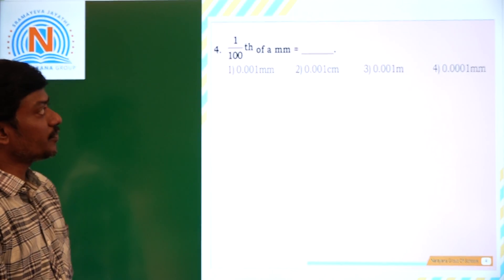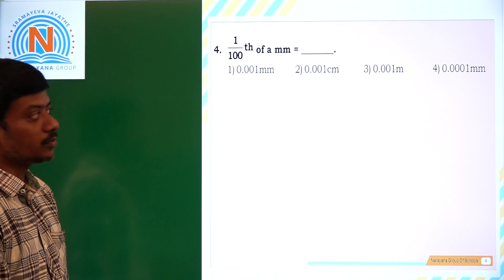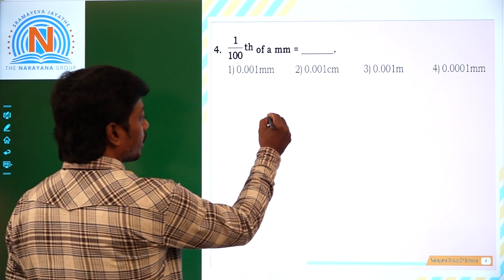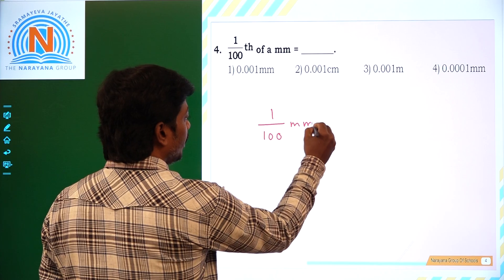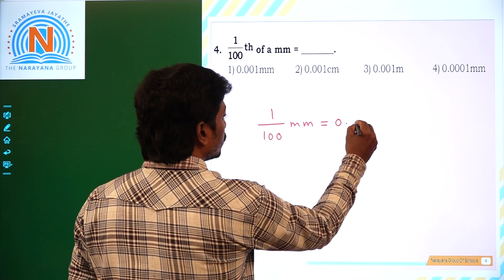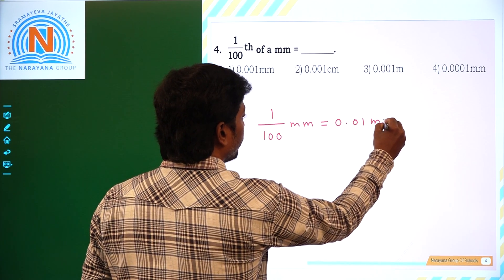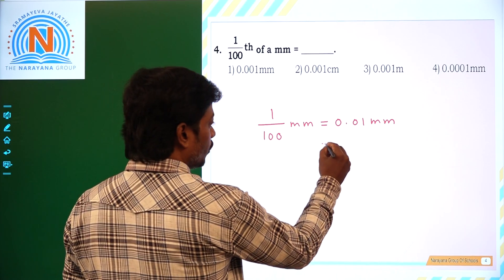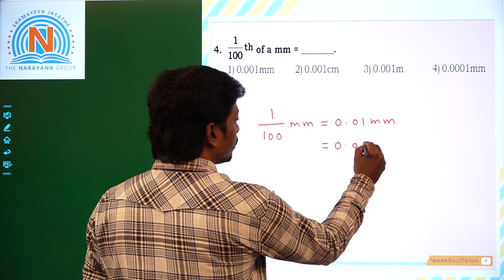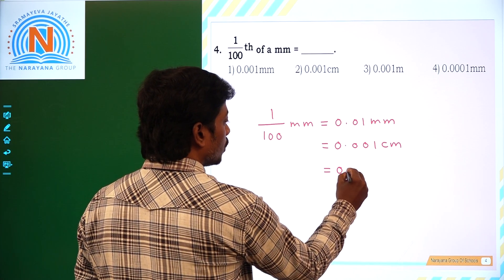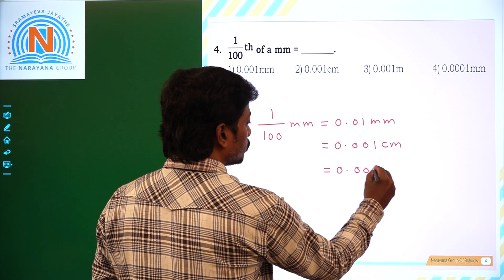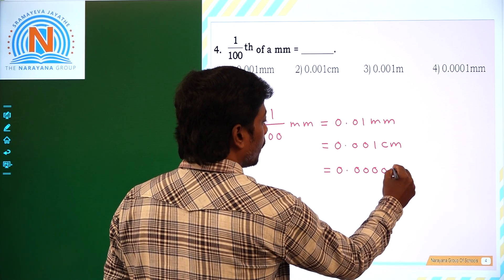1 by 100 of a millimeter is equal to dash. So, 1 by 100 of millimeter is equal to 0.01 millimeter. That is equal to 0.001 centimeter.